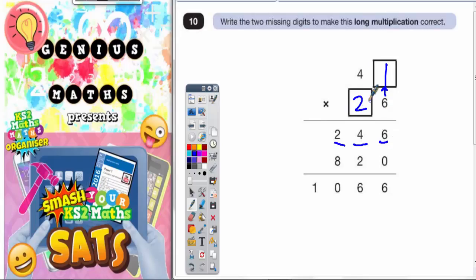Because we're timesing by 20, we put the magic 0 in, and then we just times each digit on the top by the 2, because that has the same effect as times by 20. So 2 times 1 is 2 and 2 times 4 is 8. So we've definitely got 820 there.